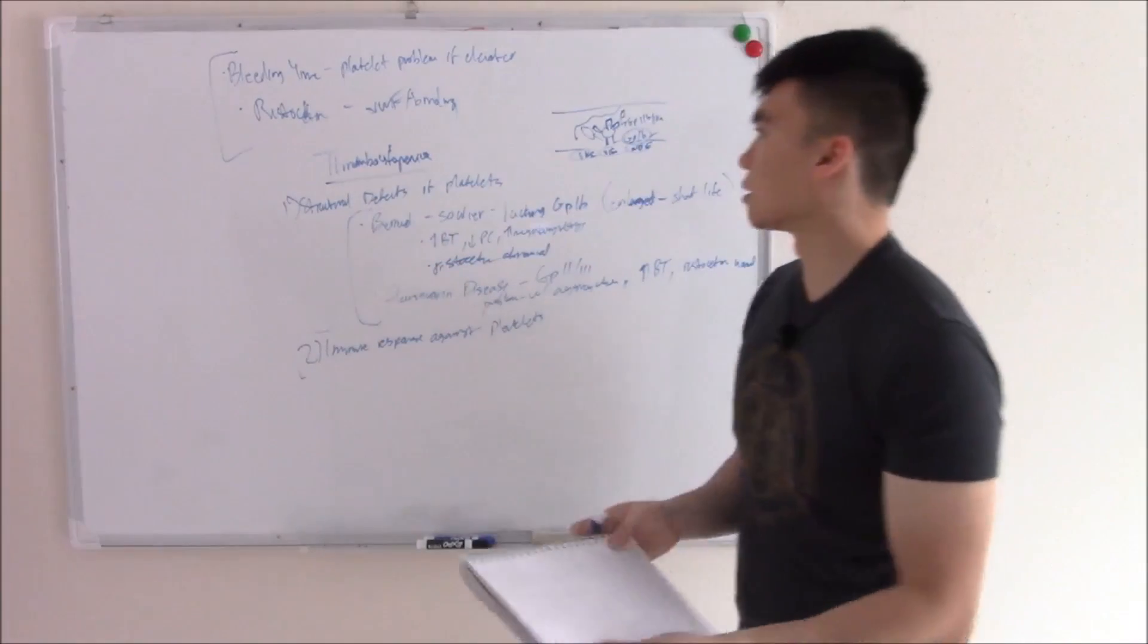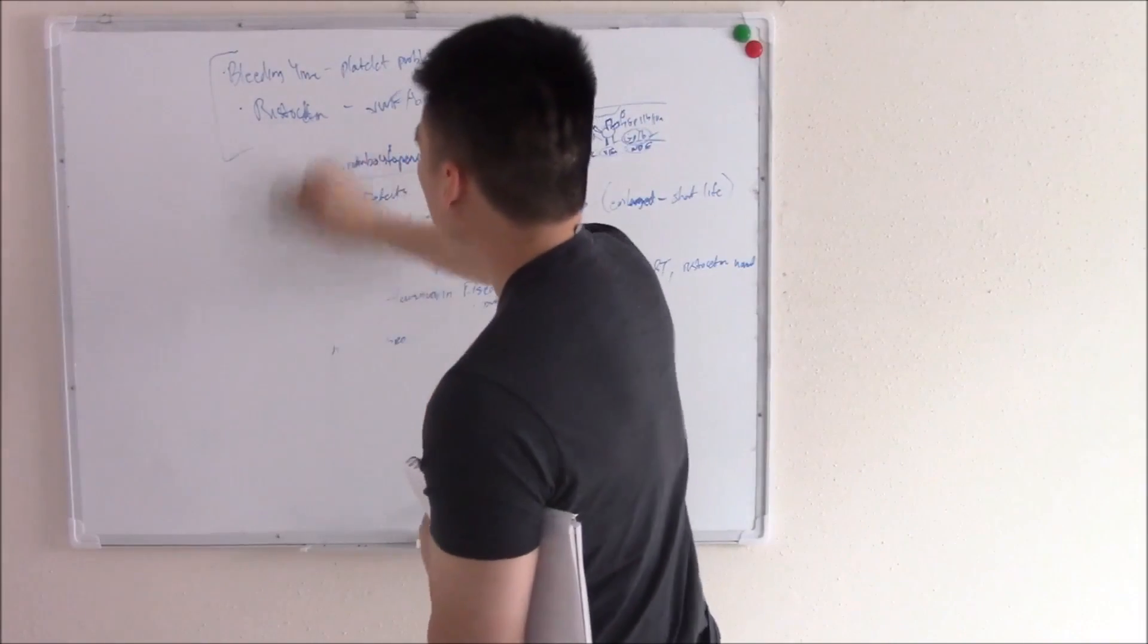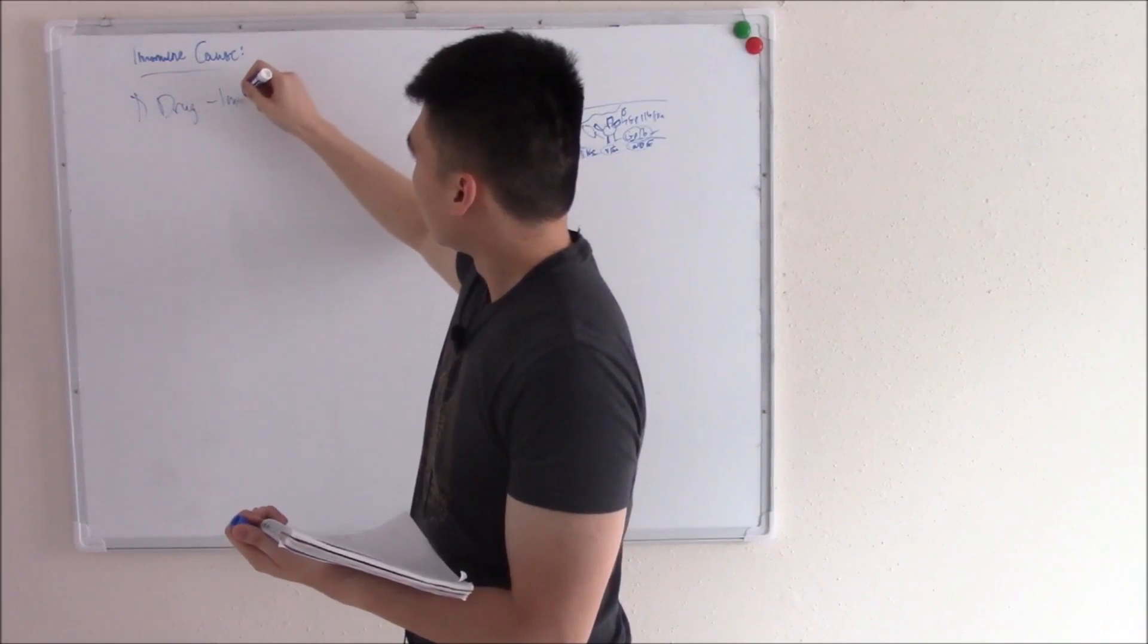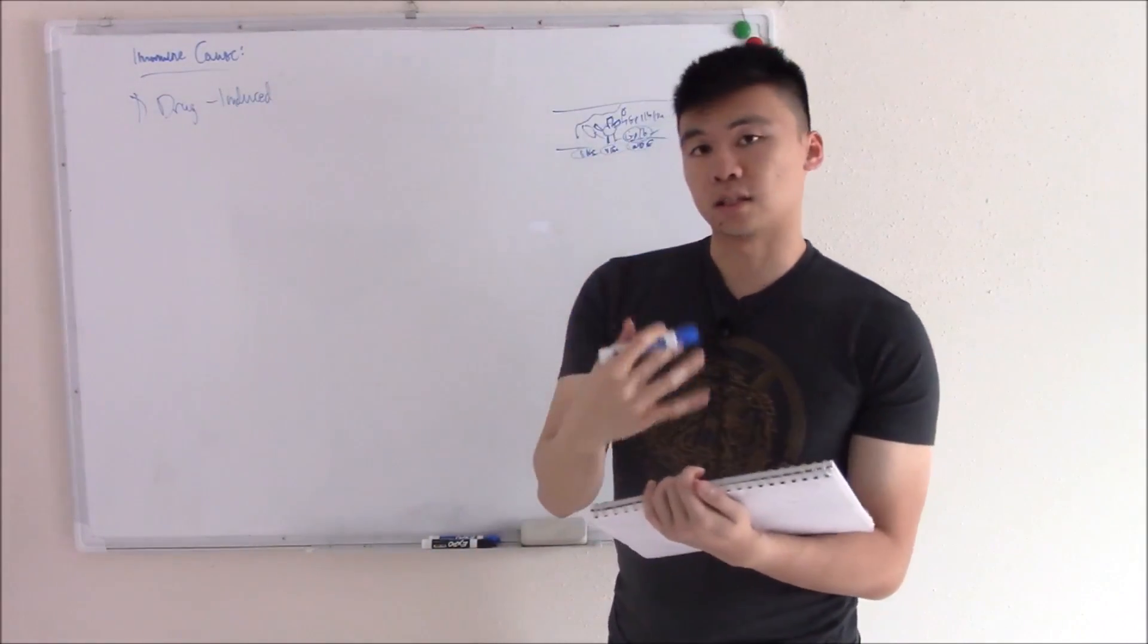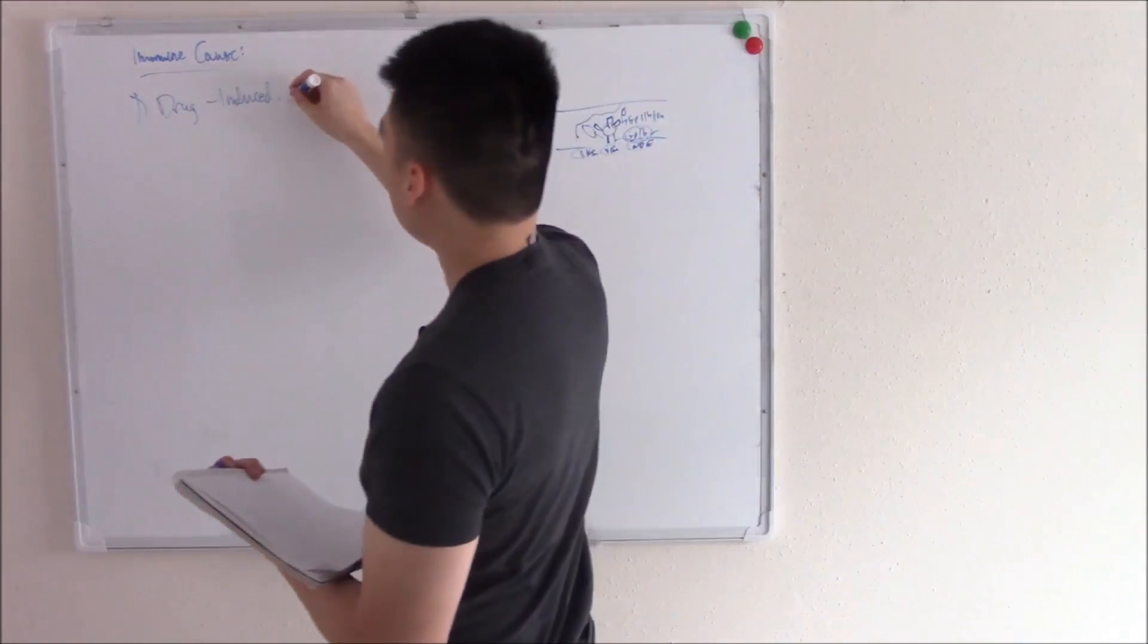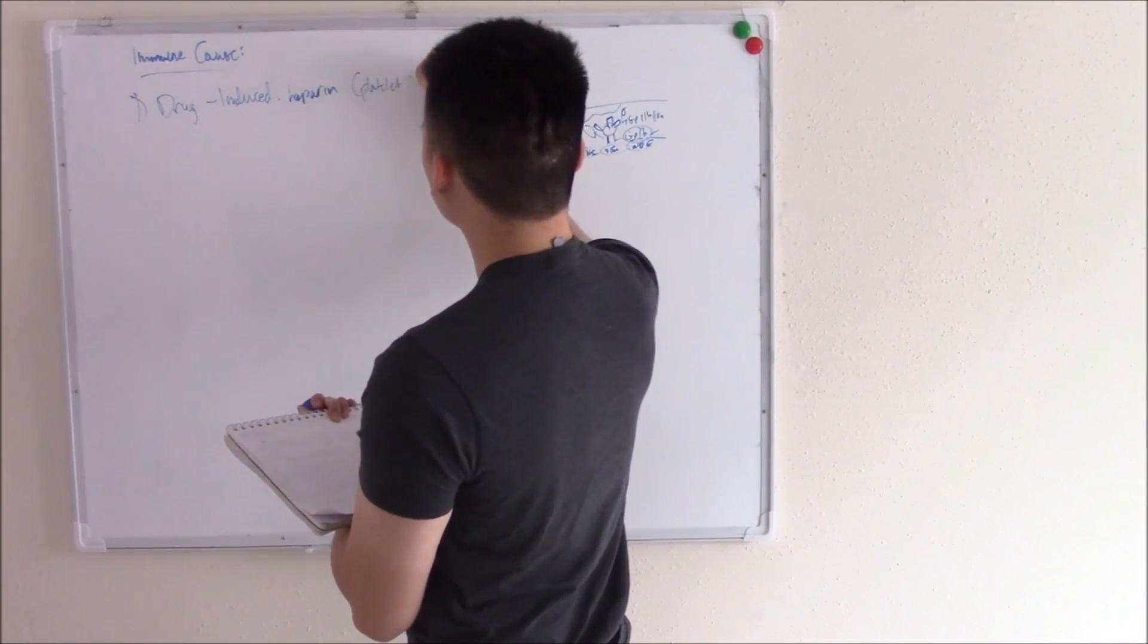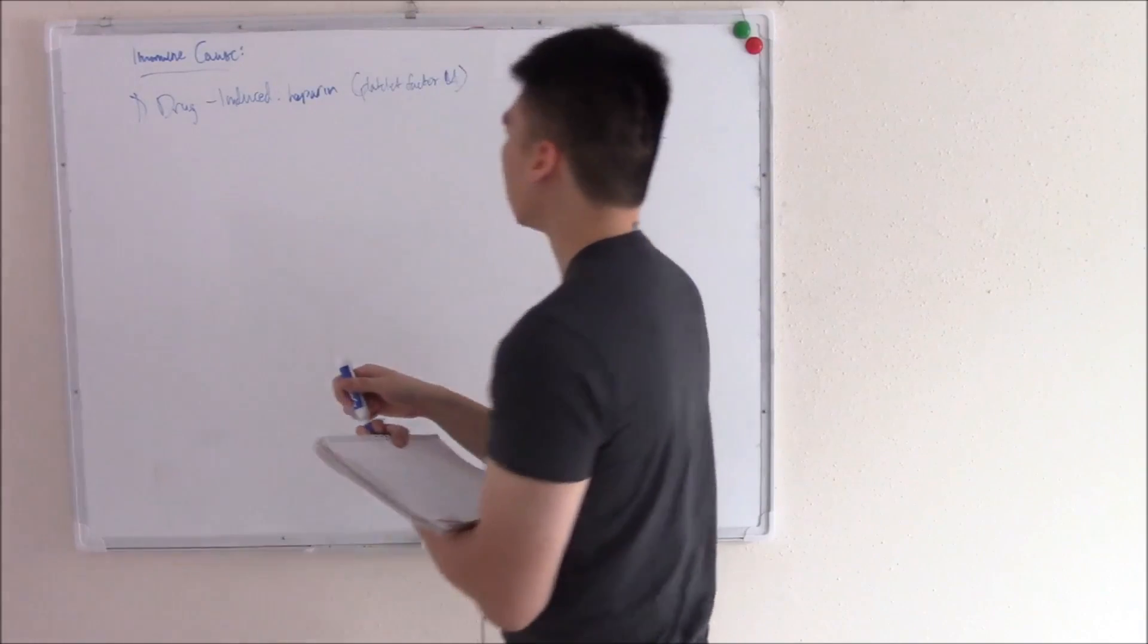Let's move on to immune causes. I'm just going to clear the board because there's a few immune causes and I want to have enough space for us to talk about all of them. So immune causes. The first one I want to talk about is drug-induced immune thrombocytopenia. A lot of drugs can cause a drug reaction that causes thrombocytopenia. The main one you need to know about is heparin.